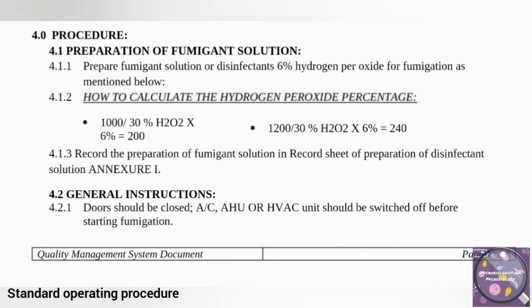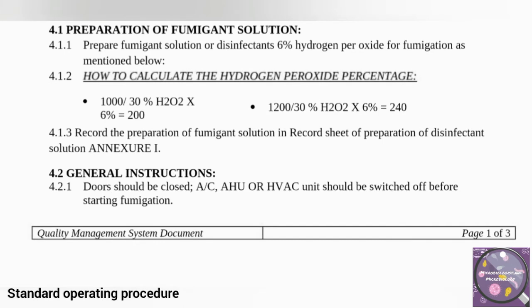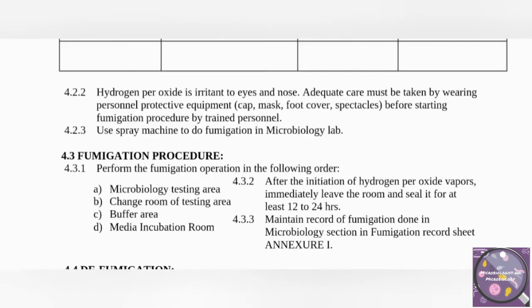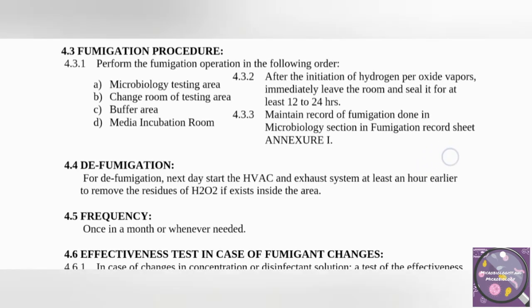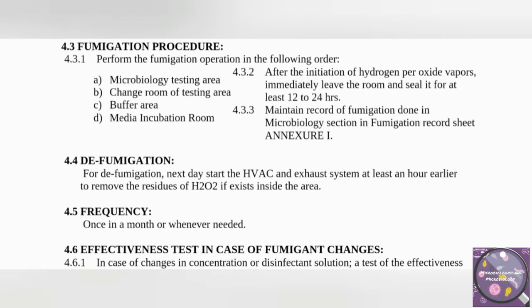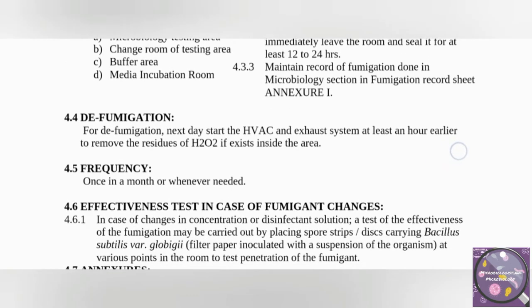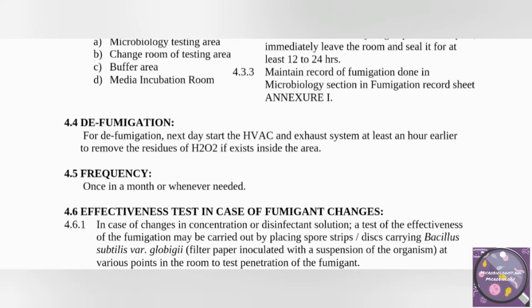Let me read the procedure from this SOP. First, we calculate the fumigant solution — the percentage shown here is 6%, which is validated, meaning that percentage is suitable for the respective area where fumigation is needed. We then prepare and record the preparation of fumigant solution. The SOP includes important general instructions: we use a spray machine for fumigation by hydrogen peroxide. Section 4.3 covers the order to perform fumigation in a microbiology lab, and we must record fumigation in the record sheet.